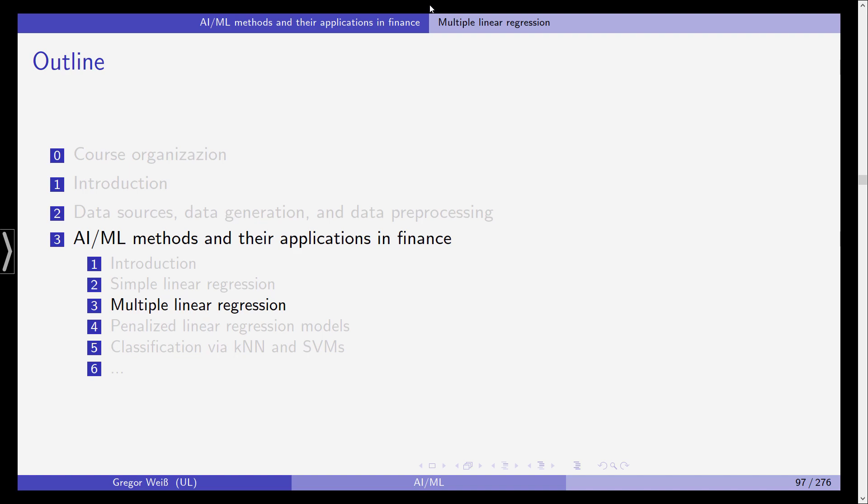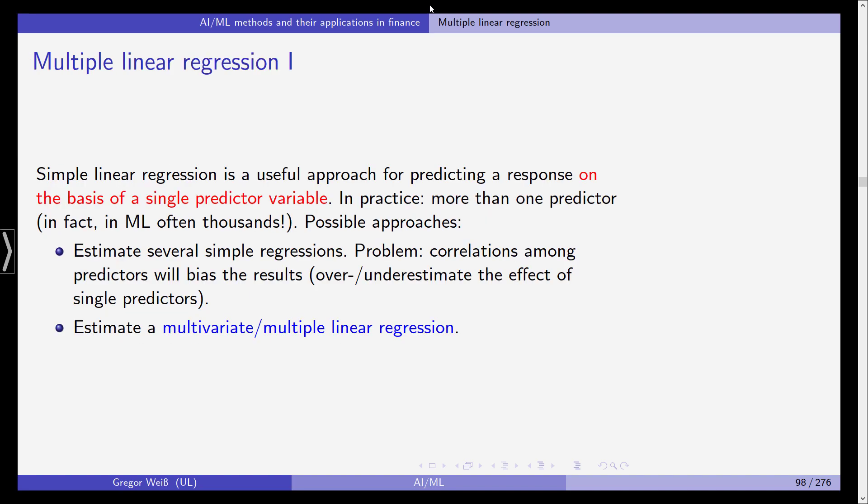Now as you can imagine, multiple linear regression is simply the extension of simple linear regression by including more than one predictor variable. So simple linear regression is useful, so is multiple linear regression, but actually in practice we all the time have more than one predictor. So in machine learning actually we might end up with using thousands of different variables, thousands of predictors. And the question now is what can we do?